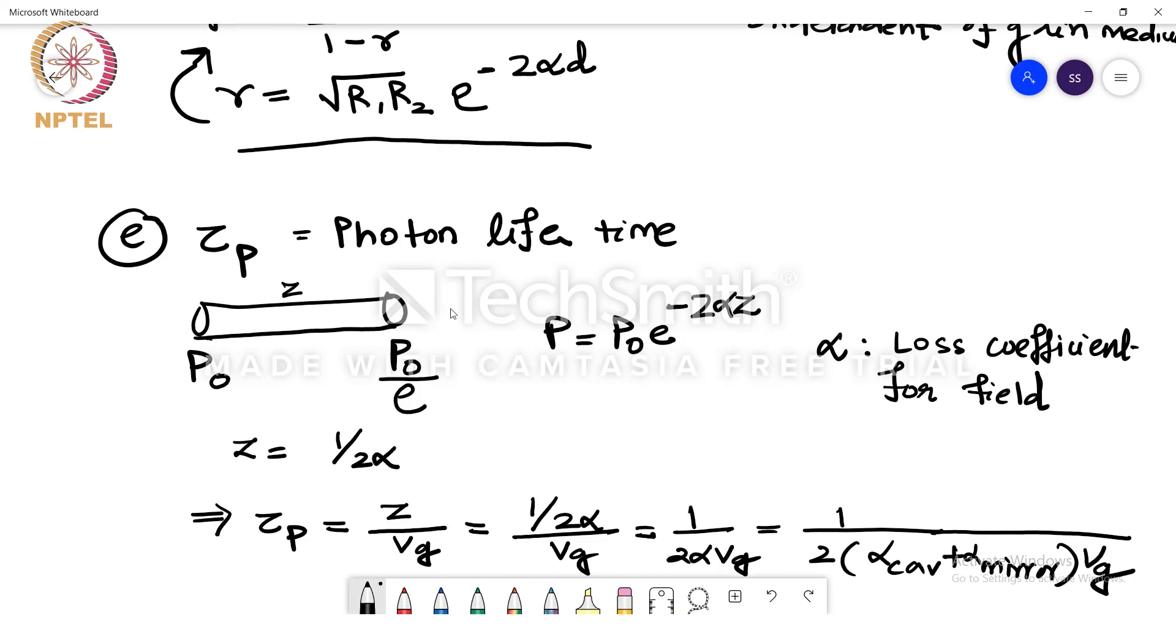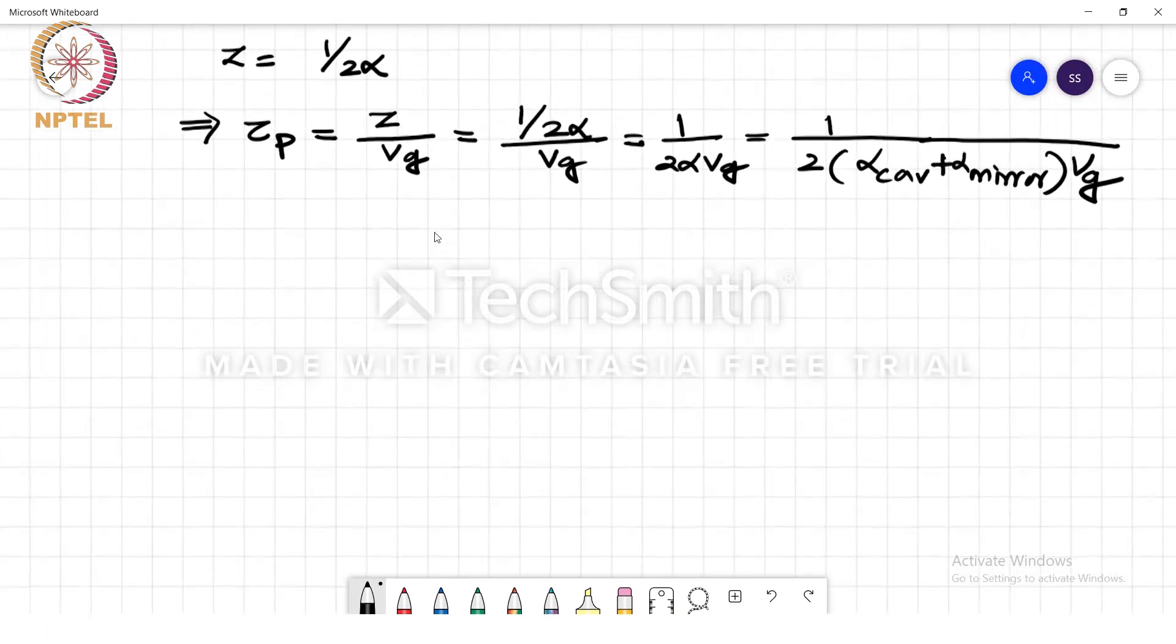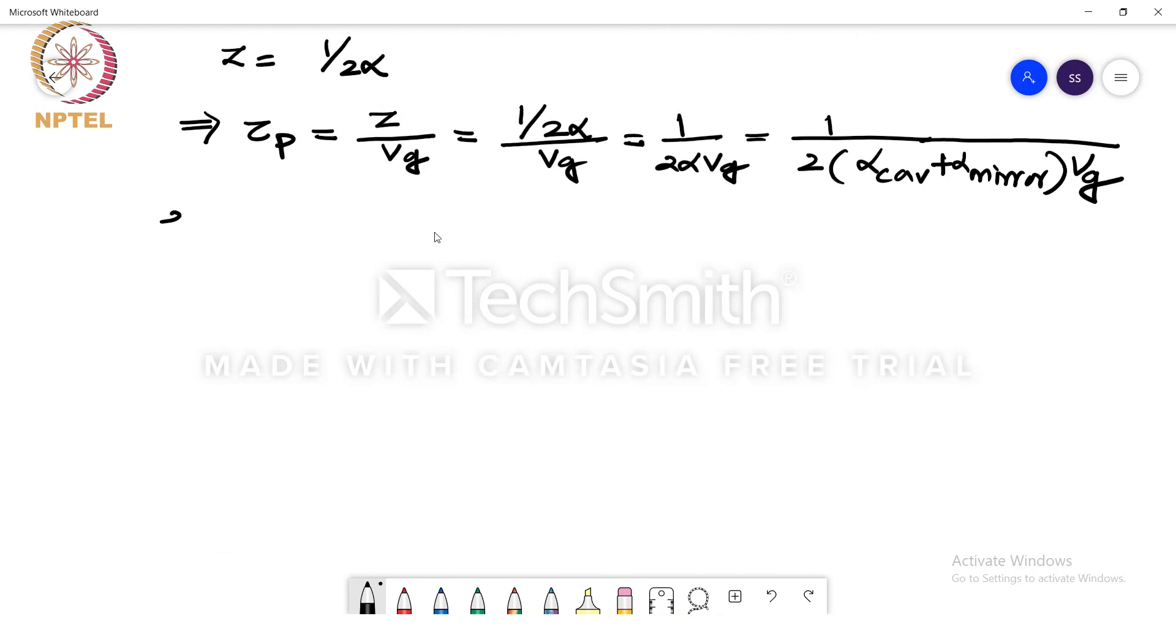Now let us move to the last question which shares the common information, part F. We have uncoated facets here, which means that the r1 and r2 value will actually come down compared to what it was 1 and 0.9, and it is given to us that it is 0.32.